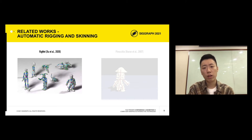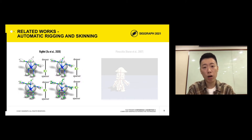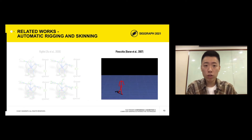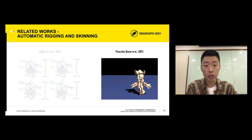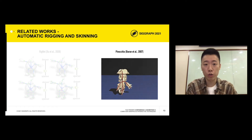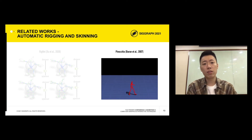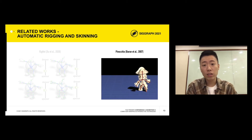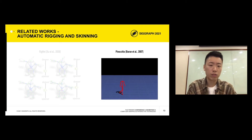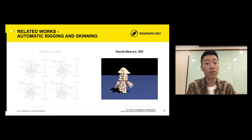However, RigNet offers very limited control over the output skeletal structure, with only a scalar indicating the joint density. Pinocchio embeds an existing skeletal structure into a shape, but its skinning weight generation is purely geometrically rule-based and lacks empirical expertise from humans. Since it does not provide pose-specific refinement, this results in undesirable artifacts. Note that this skinning technique and its variants are still part of automatic skinning solutions today.